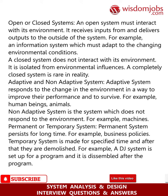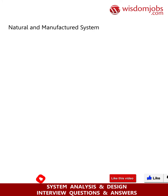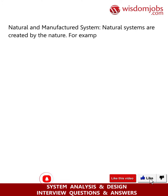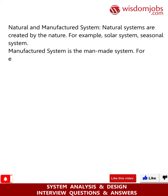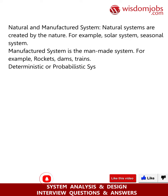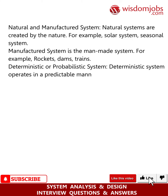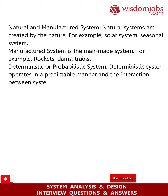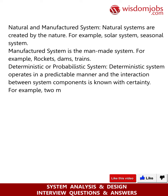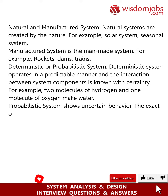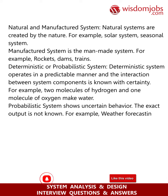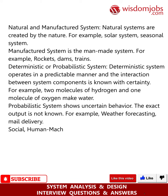For example, a DJ system is set up for a program and dismantled after the program. Natural and manufactured systems. Natural systems are created by nature, for example the solar system and seasonal systems. Manufactured systems are man-made, for example rockets, arms, and trains. Deterministic or probabilistic systems. A deterministic system operates in a predictable manner and the interaction between system components is known with certainty. For example, two molecules of hydrogen and one molecule of oxygen make water.